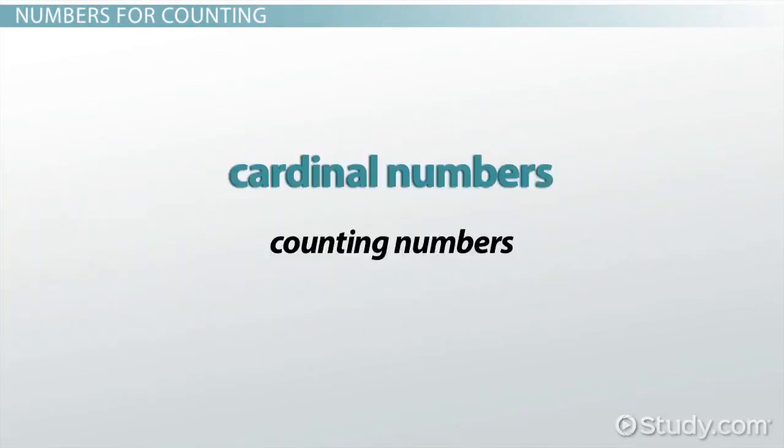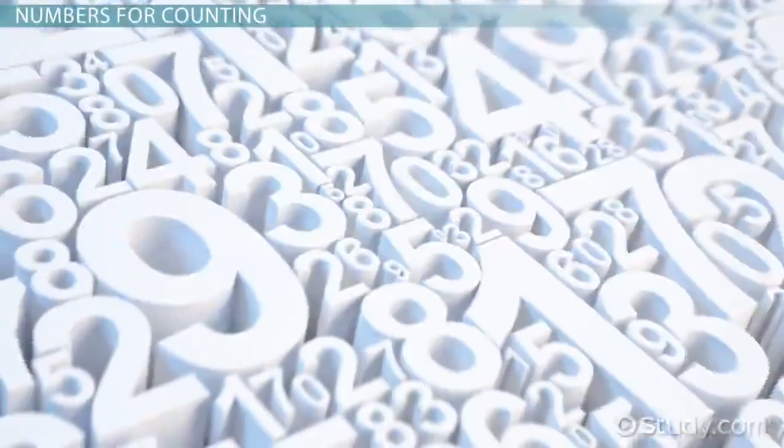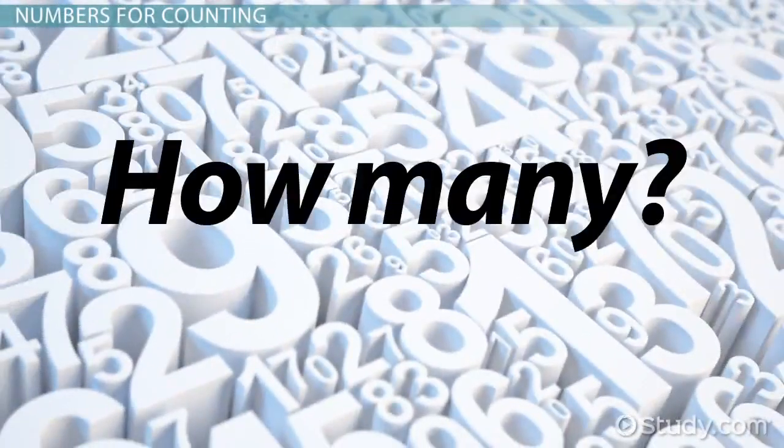These counting numbers are called cardinal numbers. Without them, we couldn't describe to each other how many of something we have or can see.